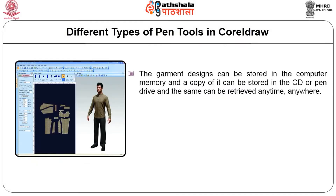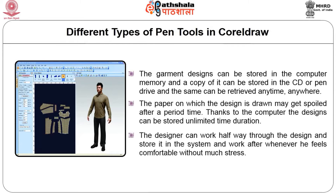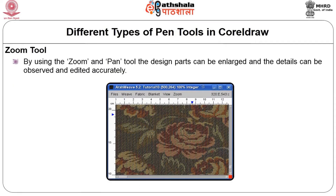As far as the storage of the design is concerned, garment designs can be stored in the computer memory and a copy can be stored in a CD or pen drive and retrieved anytime, anywhere. Paper drawn manually may get spoiled after a period of time, but in a computer the designs can be stored for an unlimited period of time without damage. The designer can work halfway through the design, store it in the system, and continue whenever comfortable. The zoom tool and pan tool help design parts to be zoomed in and worked on in close detail, making editing easy.